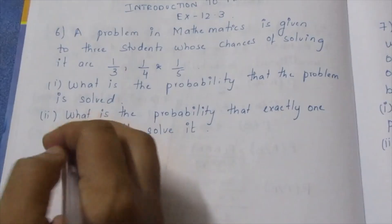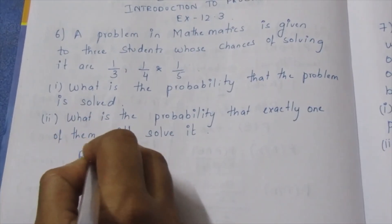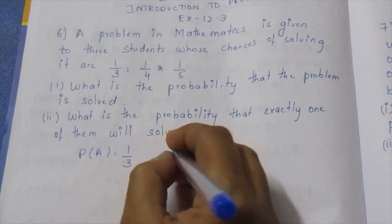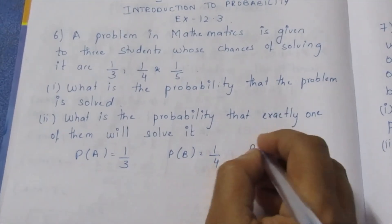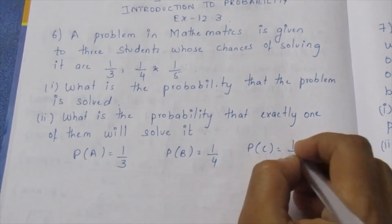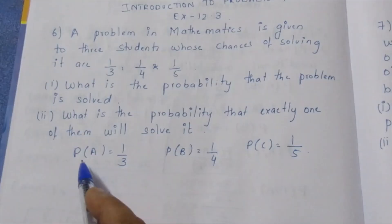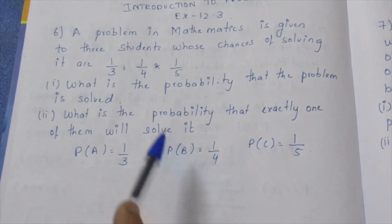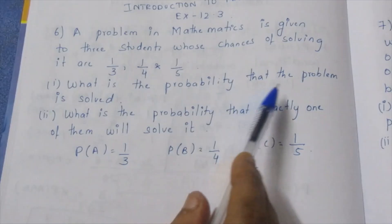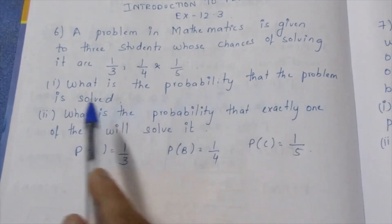First, A, B, C. P of A equal to 1 by 3, P of B equal to 1 by 4, and C 1 by 5. What is the probability that the problem is solved?